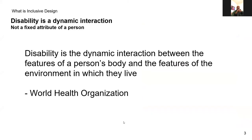I wanted to start with the definition of disability — it's not what you might think. The World Health Organization describes it as the features of a person's body in context with their environment. That means it's a dynamic interaction between a person's capabilities in the moment and their environment. For example, when you're outside looking at your phone in bright sunlight, you have trouble seeing it — so it's a more dynamic and social model of disability.